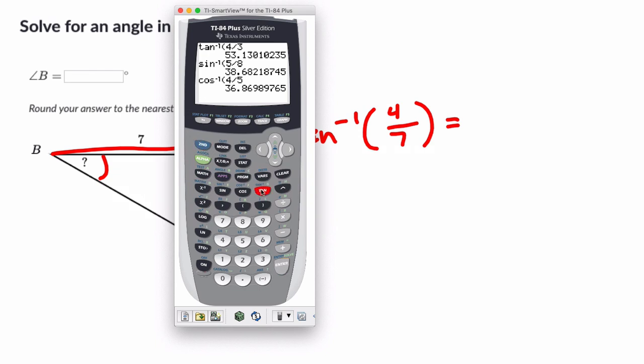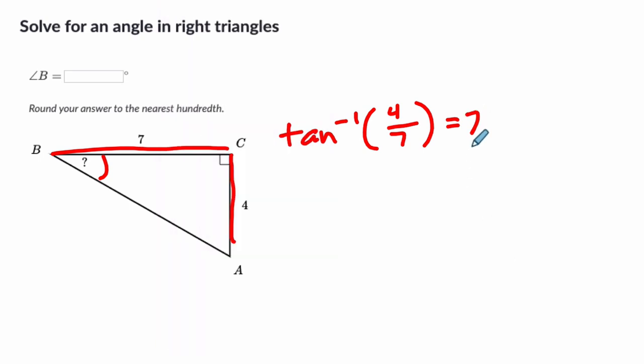So in the calculator, you can just press second, tan, four sevenths, the inverse tan of four sevenths is 29.74 degrees about, so 29.74, that's the angle that has that tangent, that tangent ratio. So we can say that the tan of 29.74 is four sevenths. You can see how these tie together.